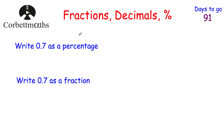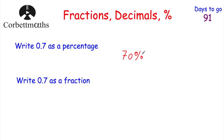So the first one is to write 0.7 as a percentage. To change a decimal into a percentage, we multiply the decimal number by 100 and then put a percentage sign on it. So if we've got 0.7, multiplying by 100 gives us 70. So 0.7 is 70%.